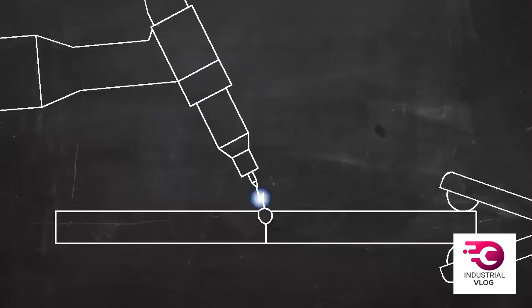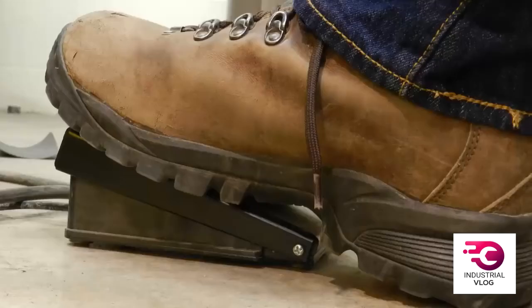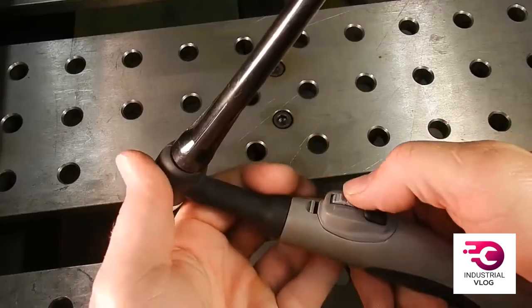TIG works by melting the base metal, that is the metal that makes up the two pieces that are to be joined. The heat is generated by an electric arc that forms between the base metal and the tungsten electrode. You can control the amount of heat with a foot pedal or with a thumb wheel on the torch.